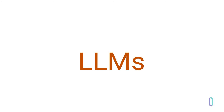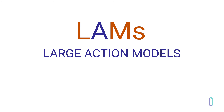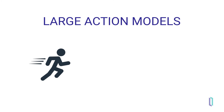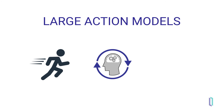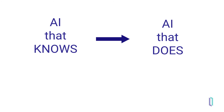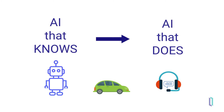While large language models have laid the groundwork for understanding and generating human-like text, advancements in AI are happening at exponentially increasing speeds. The next wave will include large action models — innovative AI systems that not only grasp the intricacies of language, but can also translate this understanding into actions. These models are trained not just to predict the next word in a sentence, but to anticipate the next step in a process, automate complex tasks, and make informed decisions, opening avenues for smarter automation in robotics, autonomous vehicles, intelligent virtual assistants, and more.